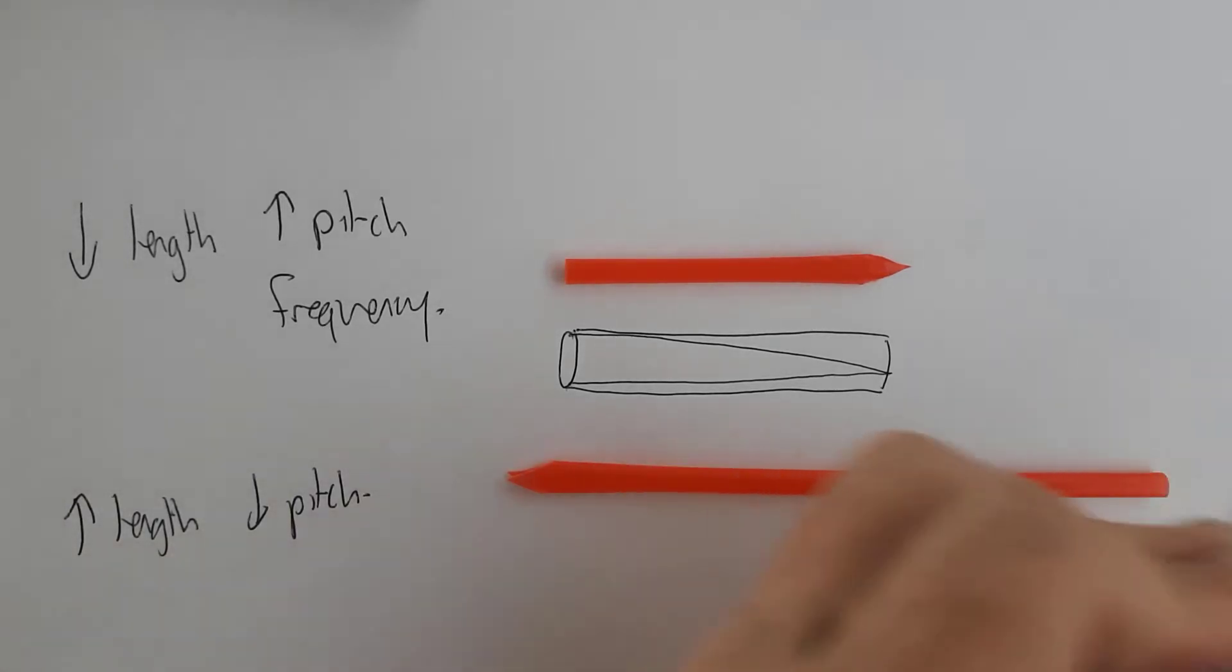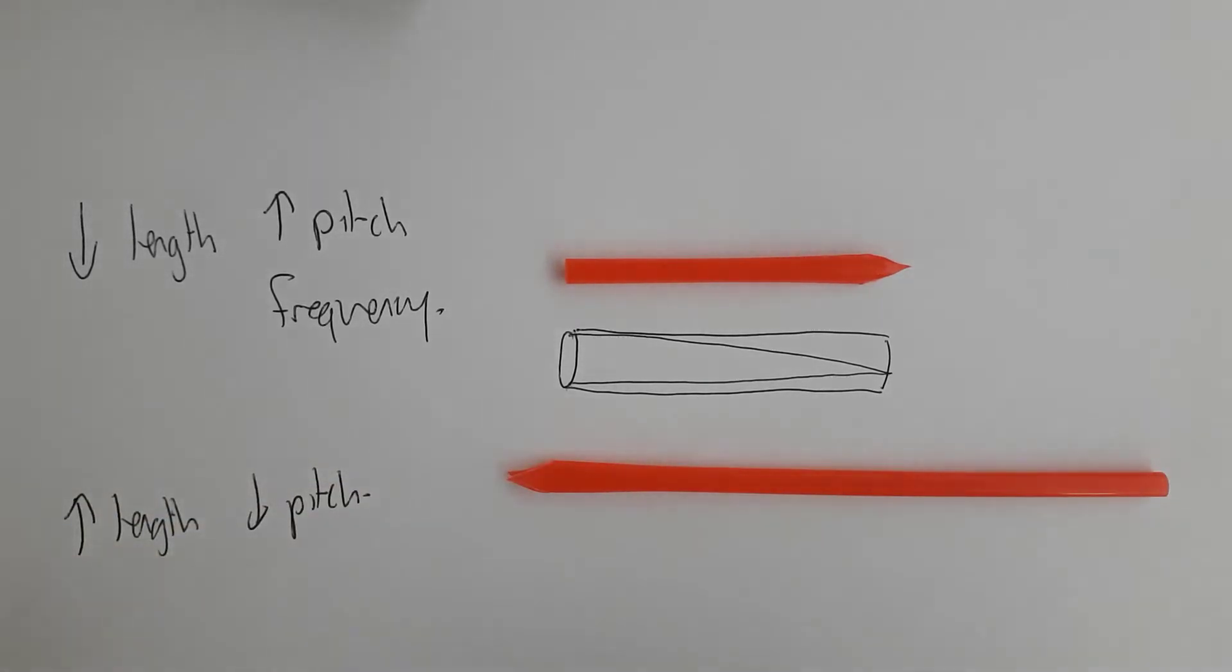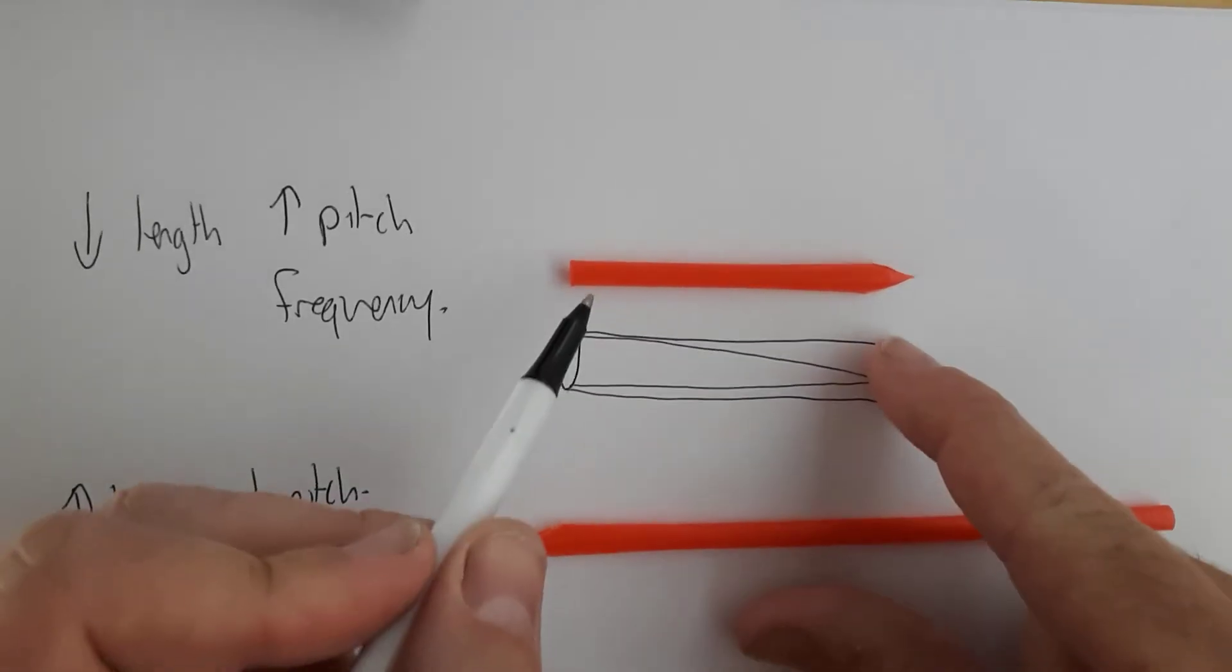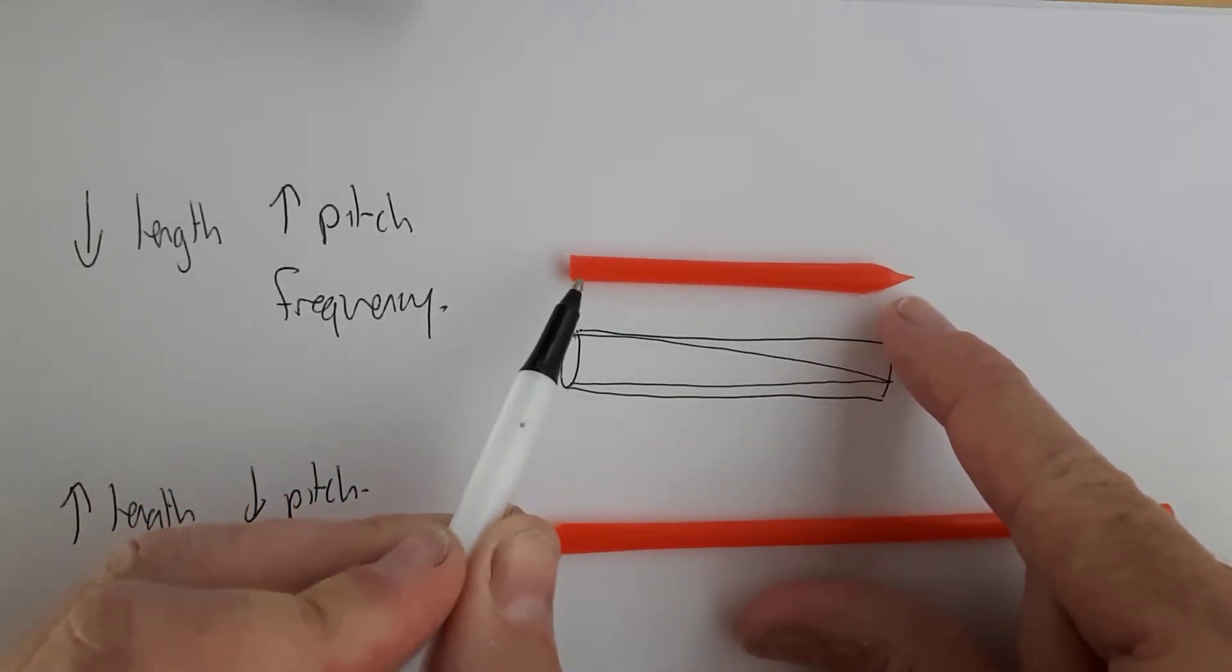So what I can do is I can draw a quarter of a wave inside the pipe. And that's what that would look like. So if we were to continue that on, four times the length of the pipe is the wavelength. So we could measure how long this pipe is.